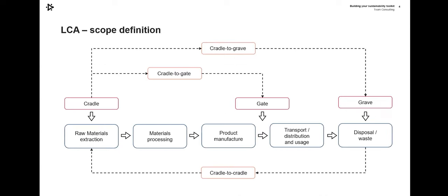We're now going to delve further into the first phase — the scope definition phase of the lifecycle assessment. This is where it's really important that we define what we want to cover, why we're doing it, and what we hope to achieve. One of the first things is working out the boundary of the lifecycle we're going to look at. You may be familiar with the terms cradle to gate, cradle to grave, or even cradle to cradle. Cradle to gate covers everything from raw material through to the point where the product has been manufactured and is ready for distribution.